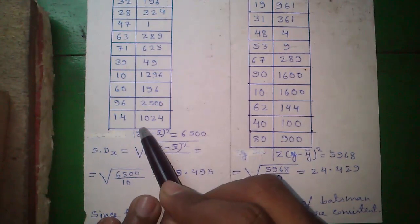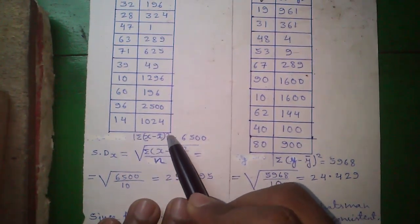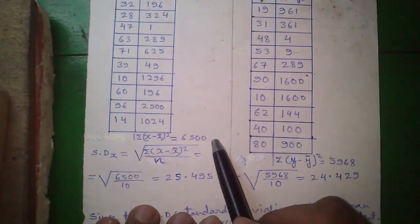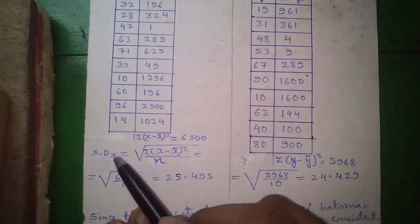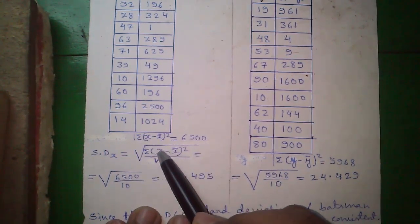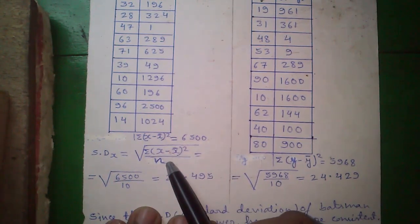Next, sum. This symbol is called summation symbol. Sum all X minus X bar whole square values. Summing all the values you will get 6500. So, the standard deviation for X is given by root over sum of X minus X bar whole square values divided by number of samples. So, that is root over 650 divided by 10 equals to 25.495.